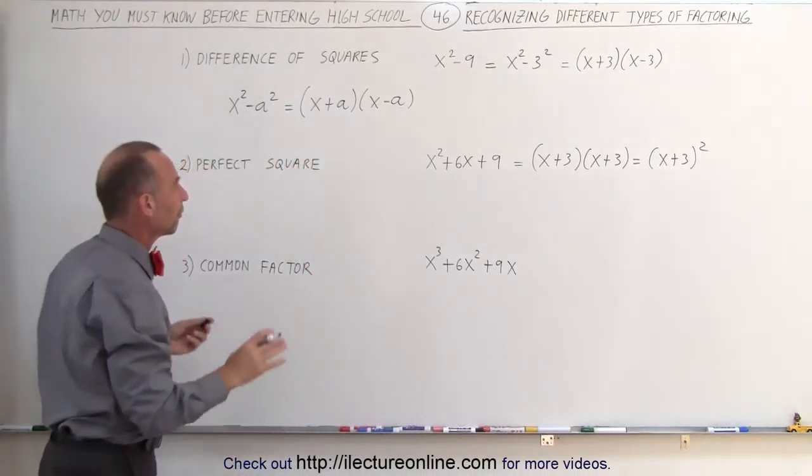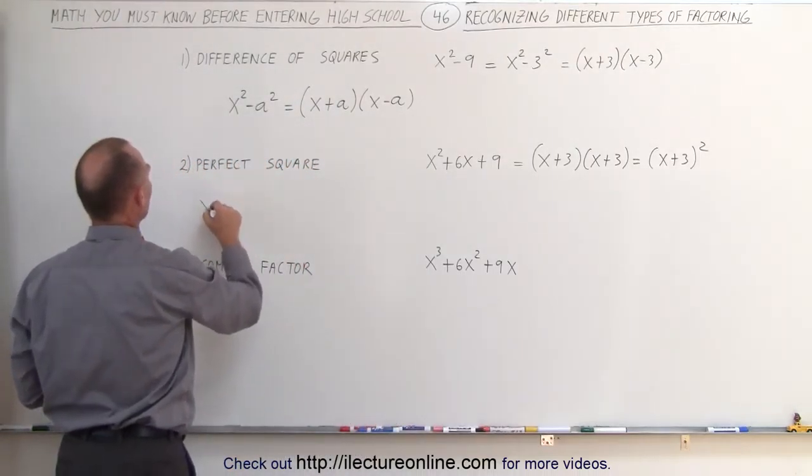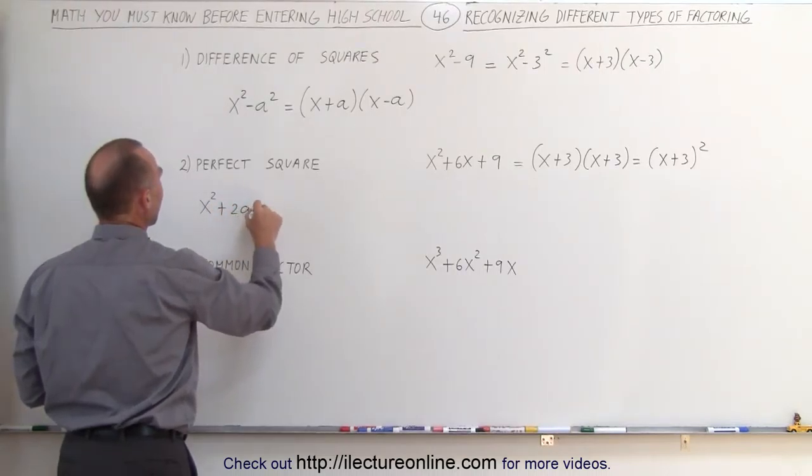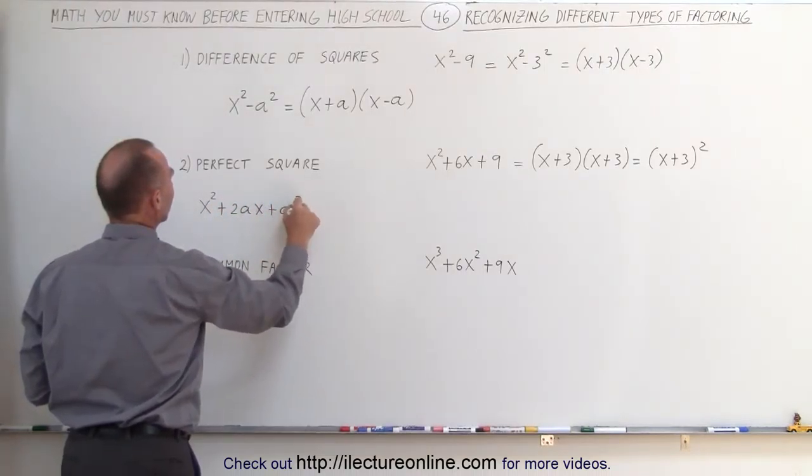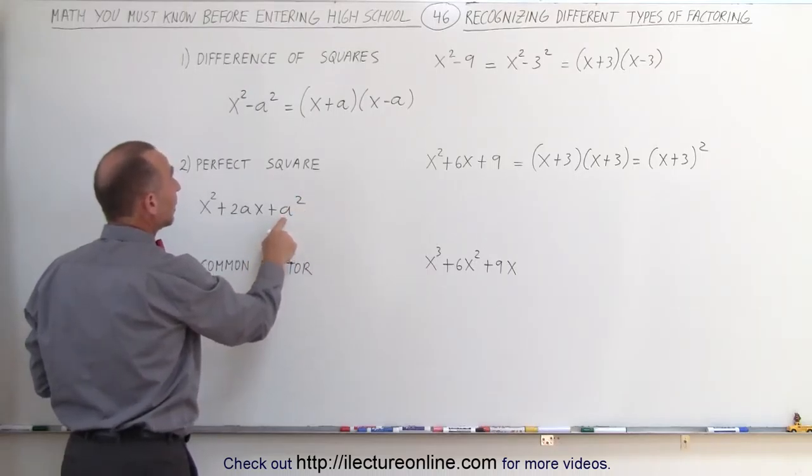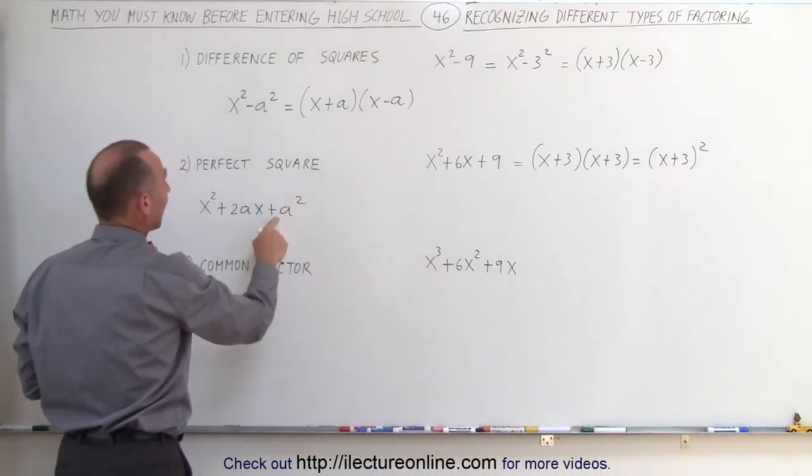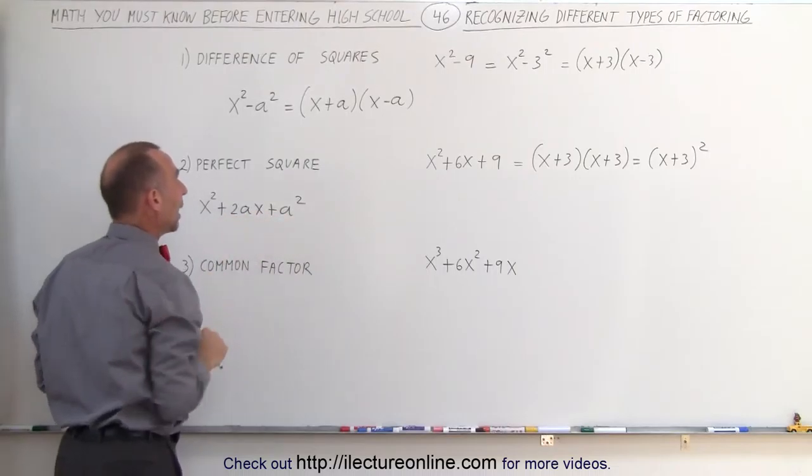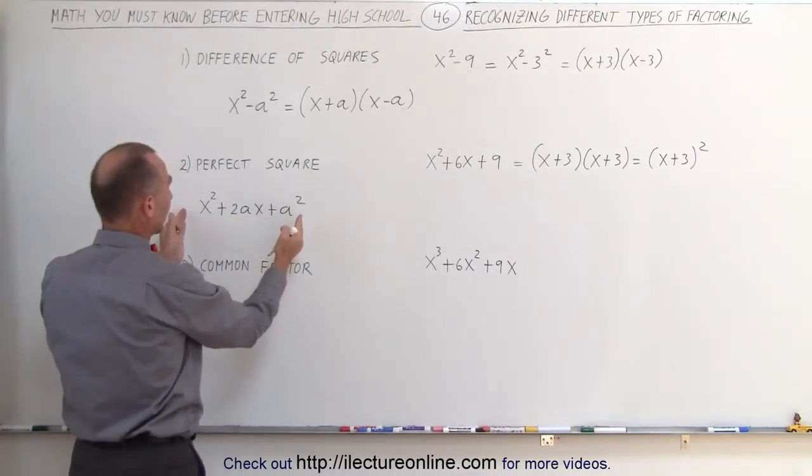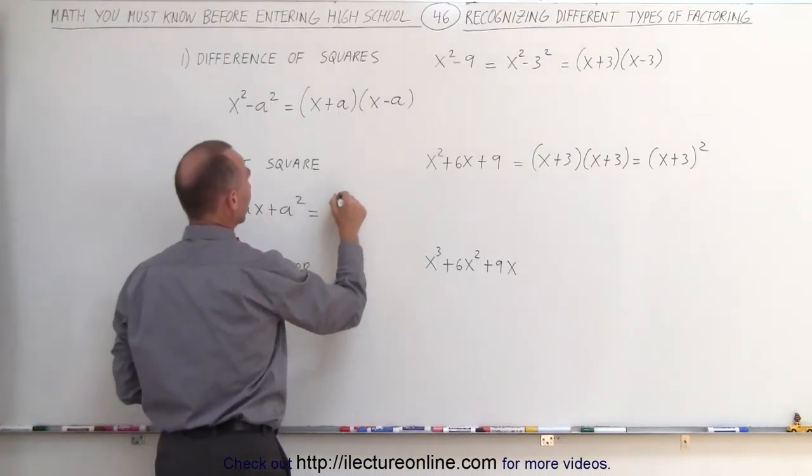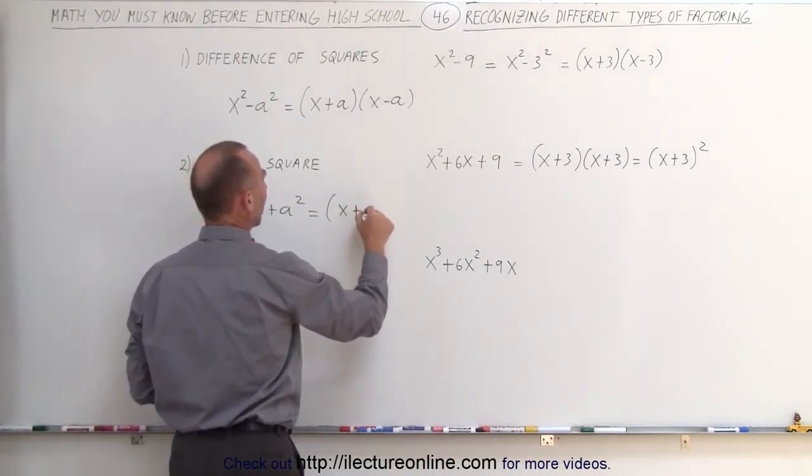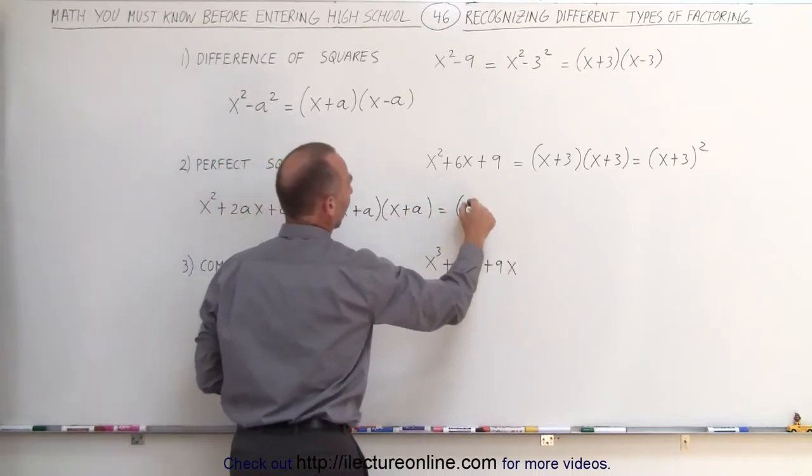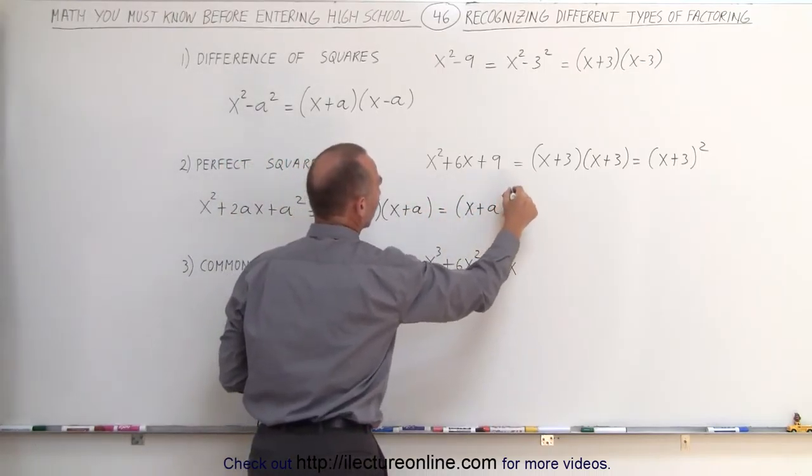The general form of a perfect square is as follows. It is x squared plus 2ax plus a squared. Notice a can be any number, like the number 3, and if you then take the number 3 times 2, you get twice the number 3, or 2a. In other words, if you get something in this format, when you factor, you can write it as x plus a times x plus a, or simply x plus a quantity squared.